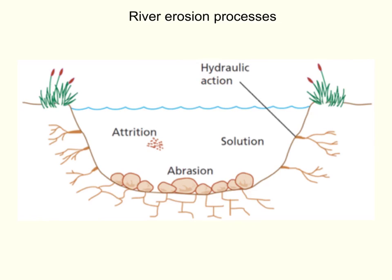First of all, hydraulic action. Hydraulic action is pointing to these cracks on the riverbank and the riverbed. What happens is, as the water moves over this crack, or especially as the river flows — if it's quite high or quite fast — then the pressure inside this void, inside these cracks, is increased. Over time, as the pressure increases again and again, these cracks start to widen and start to break off bits of the riverbank and bits of the riverbed. And these fall into the river and they become sediment or load for the river.